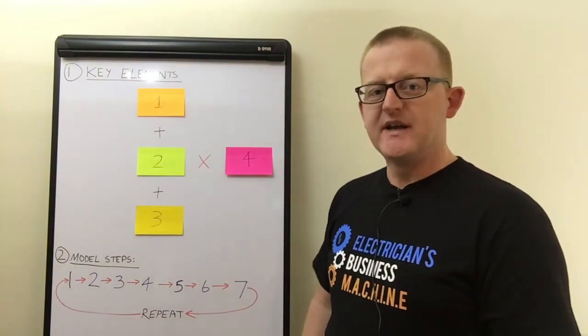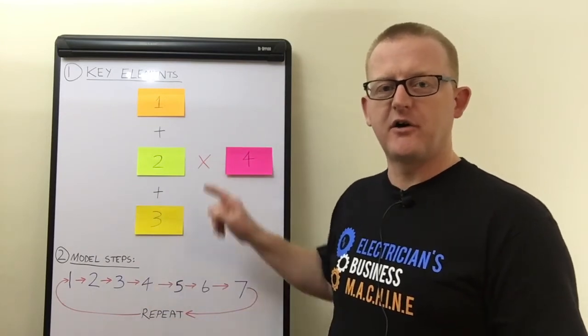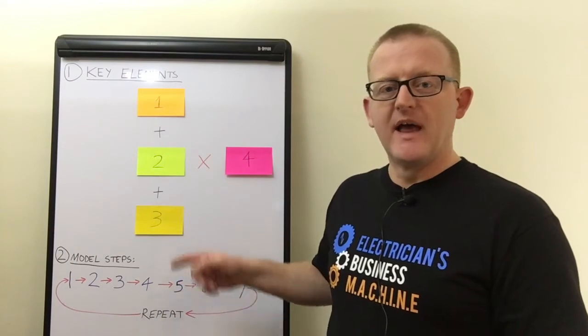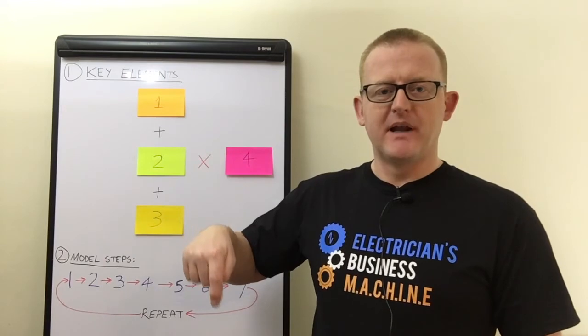Electrician's Business Machine is my seven step model which tackles the four key elements in the correct order, and the great news is that this seven step model and these four key elements are all available for free by clicking the button below.